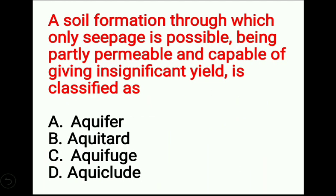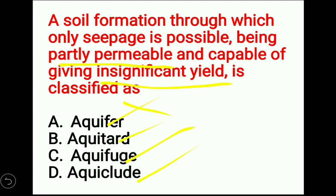Third question: a soil formation through which only seepage is possible, being partly permeable and capable of insignificant yield, is classified as? The four options are: aquifer, aquitard, aquifuge, and aquitard (aquiclude). An aquifer is a permeable rock which absorbs and transmits water — capable of both absorption and transmission. An aquitard is a partly permeable rock which absorbs water but does not give significant yield — it gives only insignificant yield.